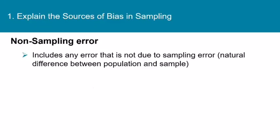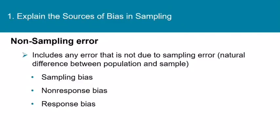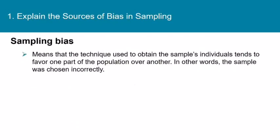Non-sampling error is pretty much everything else — any error that is not due to the natural difference between the population and the sample. Non-sampling error includes sampling bias, non-response bias, response bias, and also data entry error. Sampling bias means that the technique used to obtain the sample's individuals tends to favor one part of the population over another. In other words, the sample was chosen incorrectly.